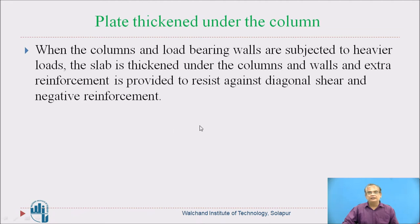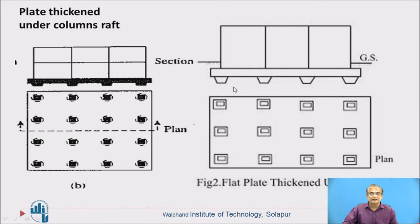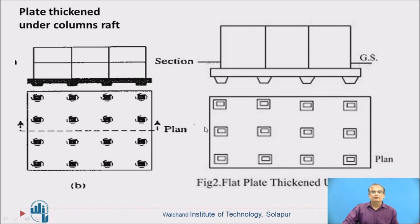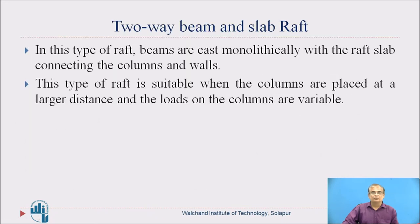The next type is plate thickened under the column. In this type, the raft slab is thickened below the columns to rigidify the slab. You can see in the photograph that below the column, the thickness of slab is increased. This type can take more load compared to the flat plate mat.